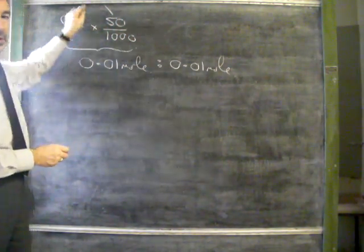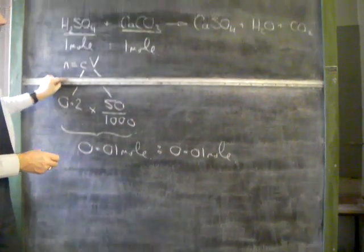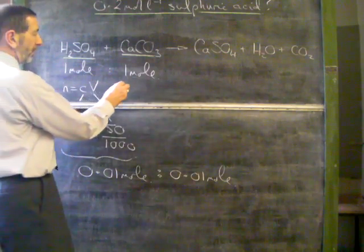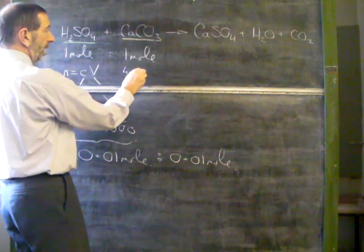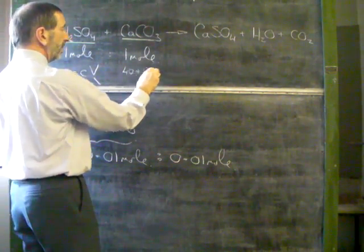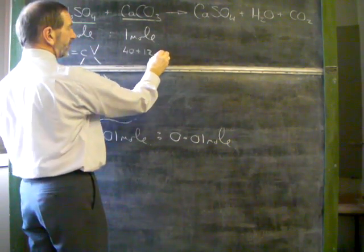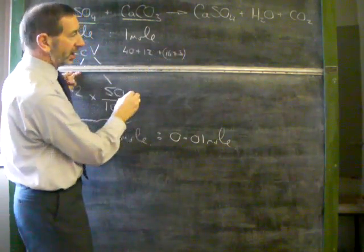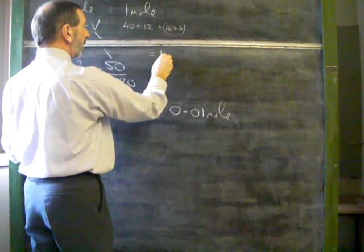What does one mole of calcium carbonate weigh? Looking at the elements, calcium has an atomic mass of 40, carbon has an atomic mass of 12, oxygen has an atomic mass of 16, and there are three of those. This one we come across a great deal, comes to 100 grams.